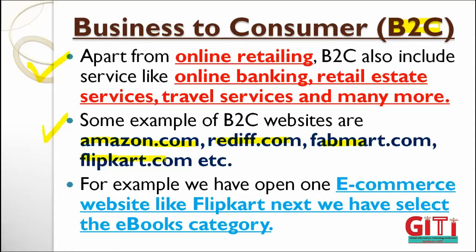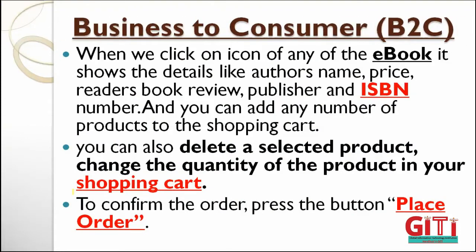Fabmart and Flipkart are examples. Using e-commerce websites like Flipkart, you can order one e-book, two books, or three books online. However, bulk orders like 25 or more books do not come under B2C category. If you want to purchase a book online, you click on the online icon and get lots of details such as author name, book price, reader reviews, publisher name, and ISBN number.